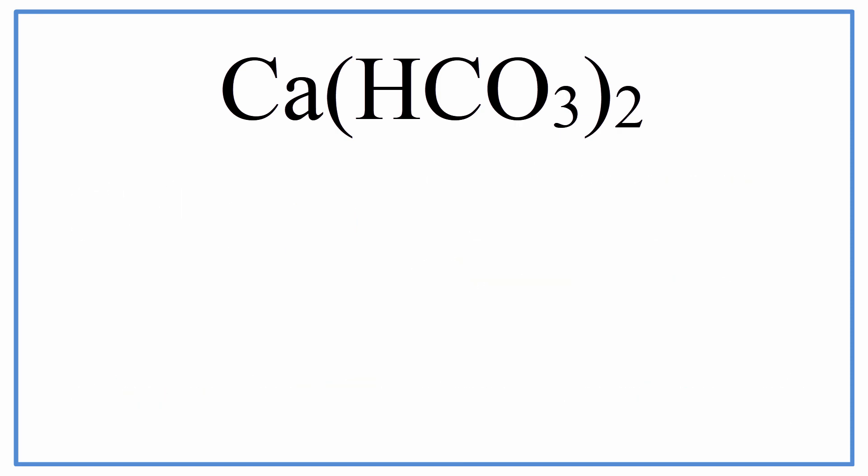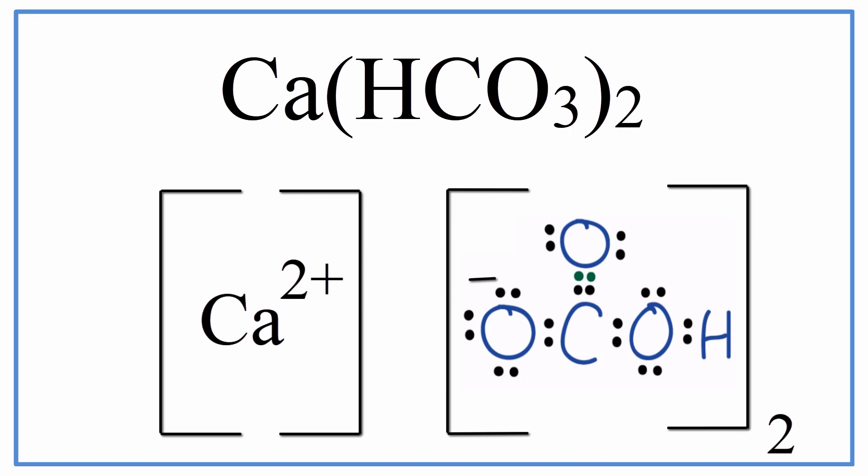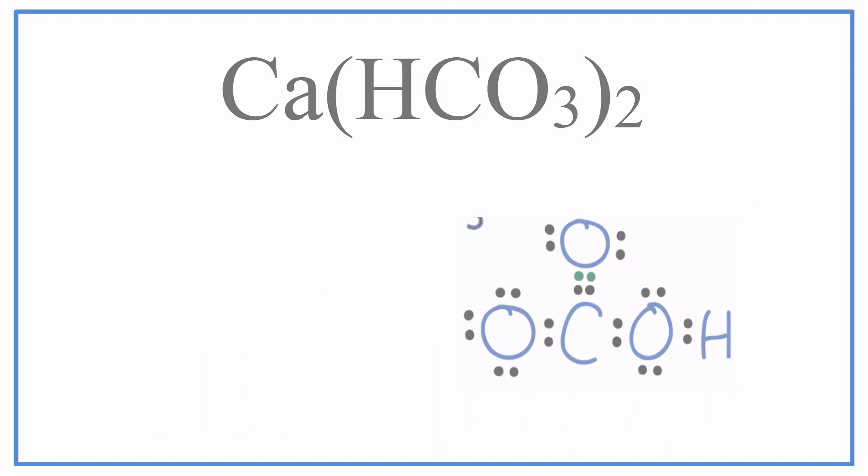We can also represent this with a Lewis structure, and that might look something like this. Note that this represents a formula unit for the Ca(HCO3)2 molecule, which is normally found as a crystal consisting of many formula units.